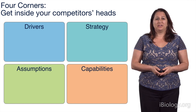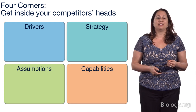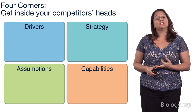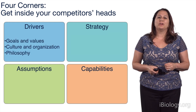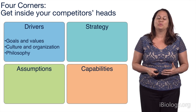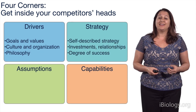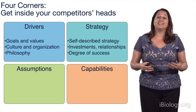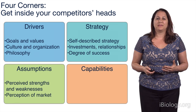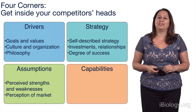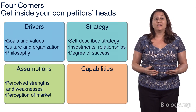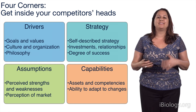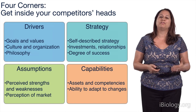Our third and final tool is the Four Corners, which is really useful for getting inside the head of a competitor or stakeholder. Using Four Corners, you think through a stakeholder using four parameters. Drivers — what are their goals, values, culture, organization, and philosophy? Basically, how do they make decisions and what's important to them? Strategy — how have they described their strategy, what investments have they made, what relationships do they have, and are they likely to continue or change course? Assumptions — how do they assess their own strengths, weaknesses, and the market? And Capabilities — what assets and competencies do they have, and how adept are they at making changes to their strategy?